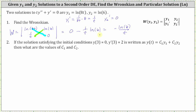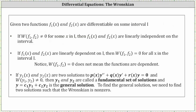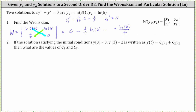Before we answer number two, let's talk a little more about the Wronskian. If y sub one and y sub two are two solutions to the given second order homogeneous differential equation, which fits the form of our differential equation, and the Wronskian doesn't equal zero, then y sub one and y sub two are called the fundamental set of solutions — which in our case we were given — and y equals c sub one times y sub one plus c sub two times y sub two is the general solution. Going back to our problem, notice how they gave us this information by telling us the solution is in the form guaranteed by the Wronskian.